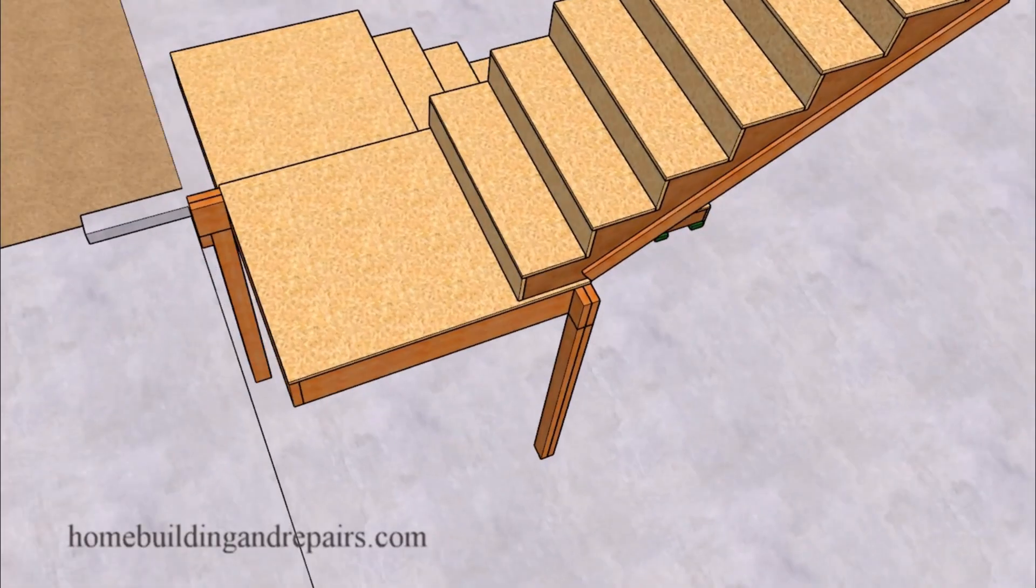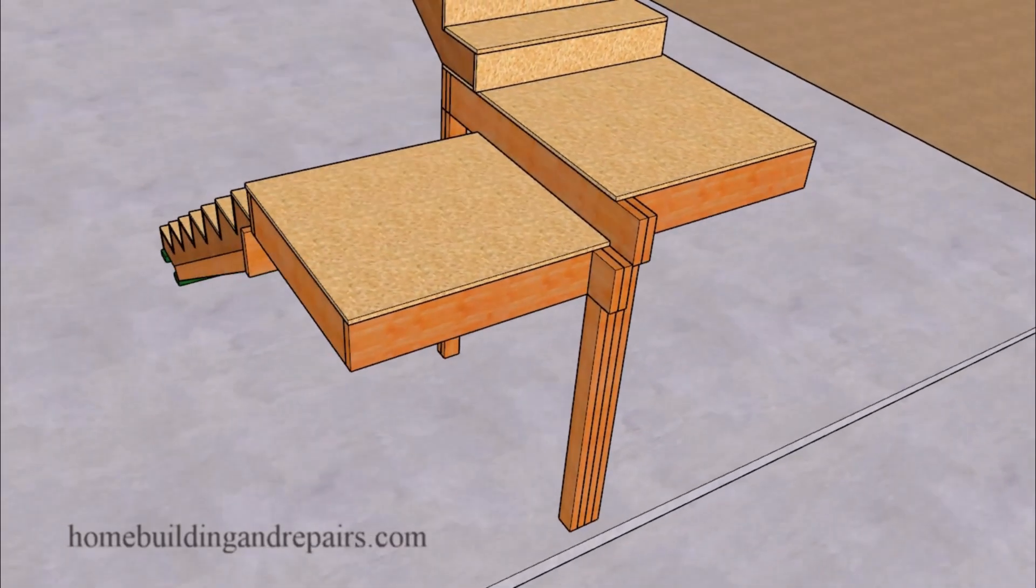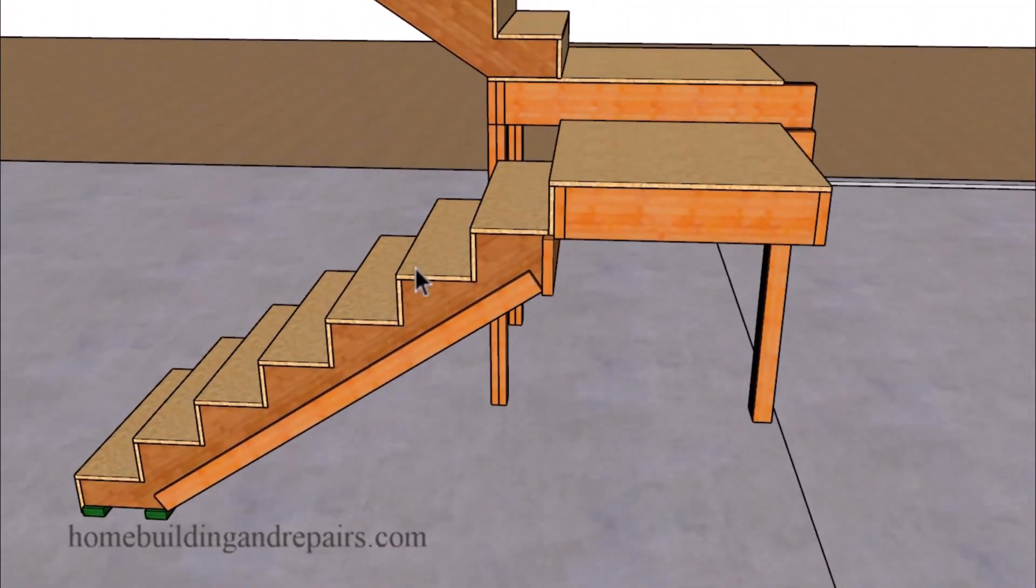Then we can go around the stairway to provide you with another shot of the support studs on the other side. Then we can go over to the other side here. Take a look at our spacer board, stringers, ledger, and of course our riser here.